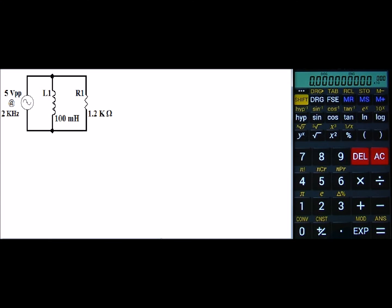Hello, today let's go ahead and take a look at a parallel RL circuit. Our voltage source is 5 volts peak to peak running at 2 kilohertz. Our inductor is 100 millihenrys and our resistor is 1.2k.